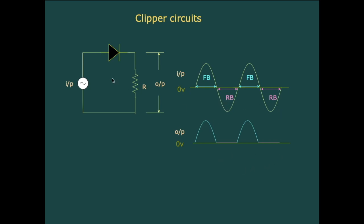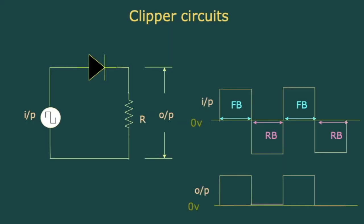Since the diode is connected in series with the output, this is a basic series clipper circuit. If instead of a sine wave we give a square wave at the input, during the positive half the diode is forward biased giving output equal to the input, whereas during the negative half the diode is reverse biased giving output voltage equal to zero.